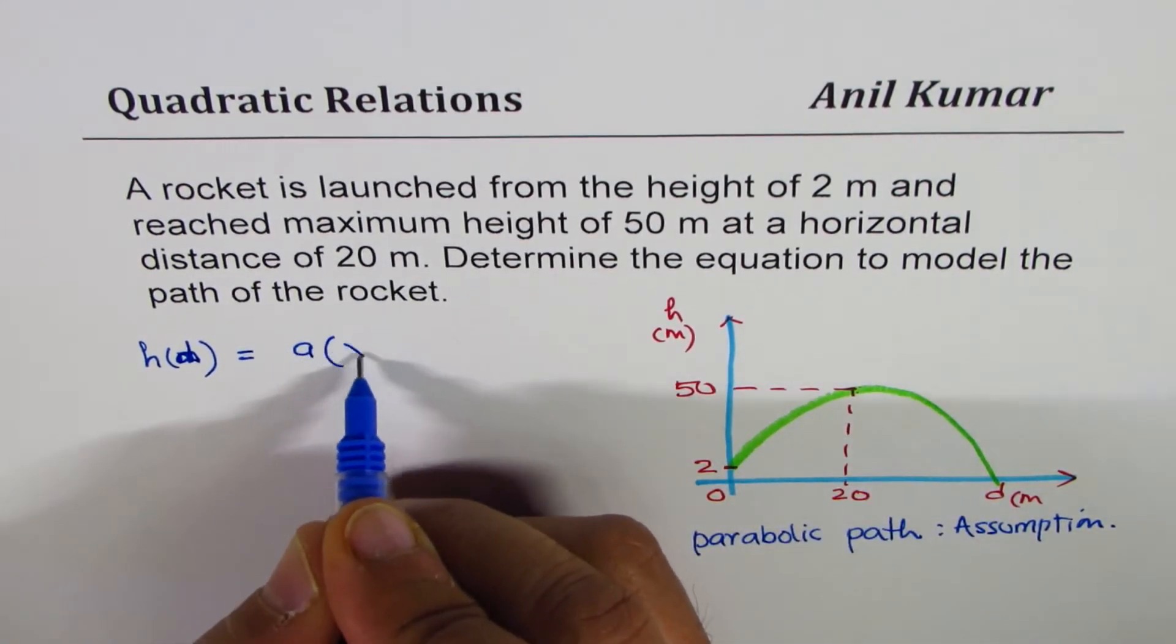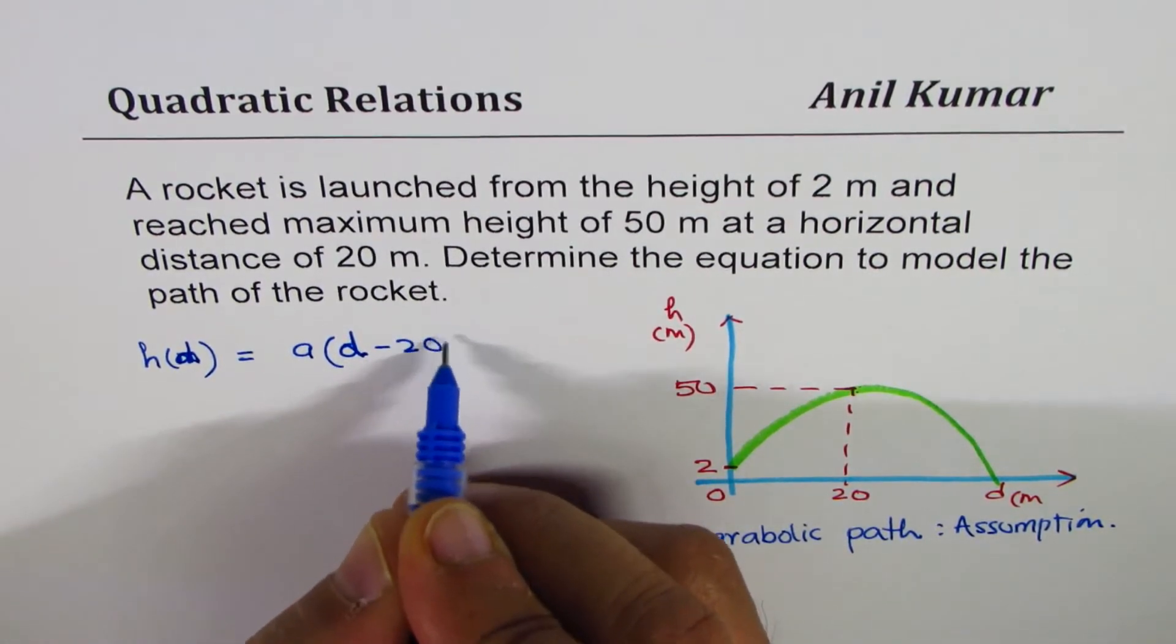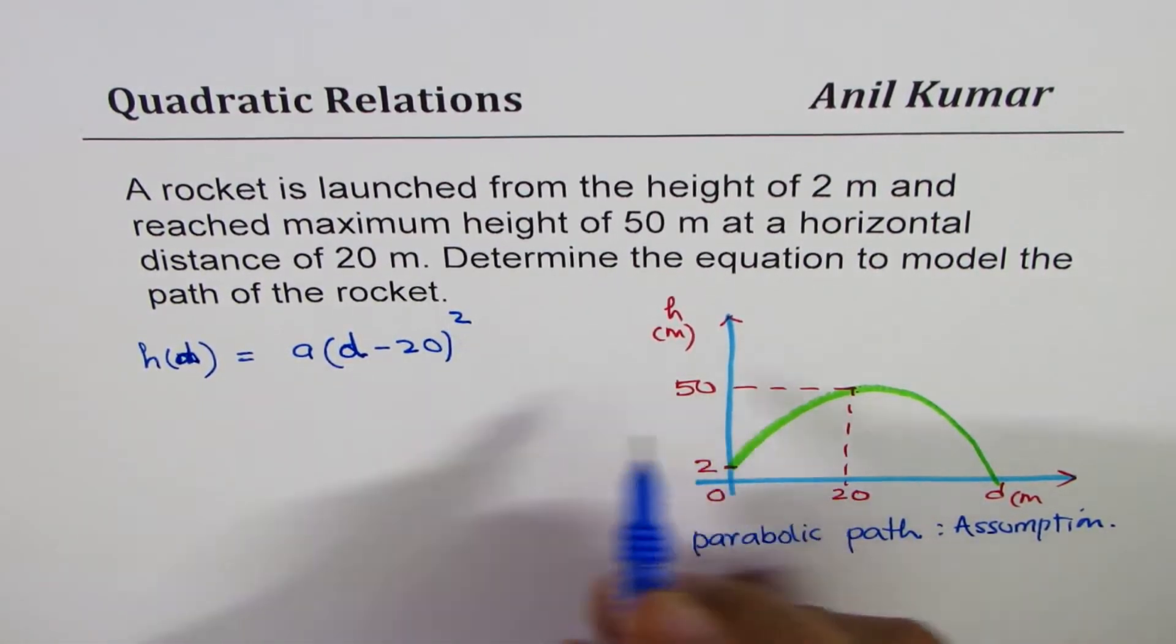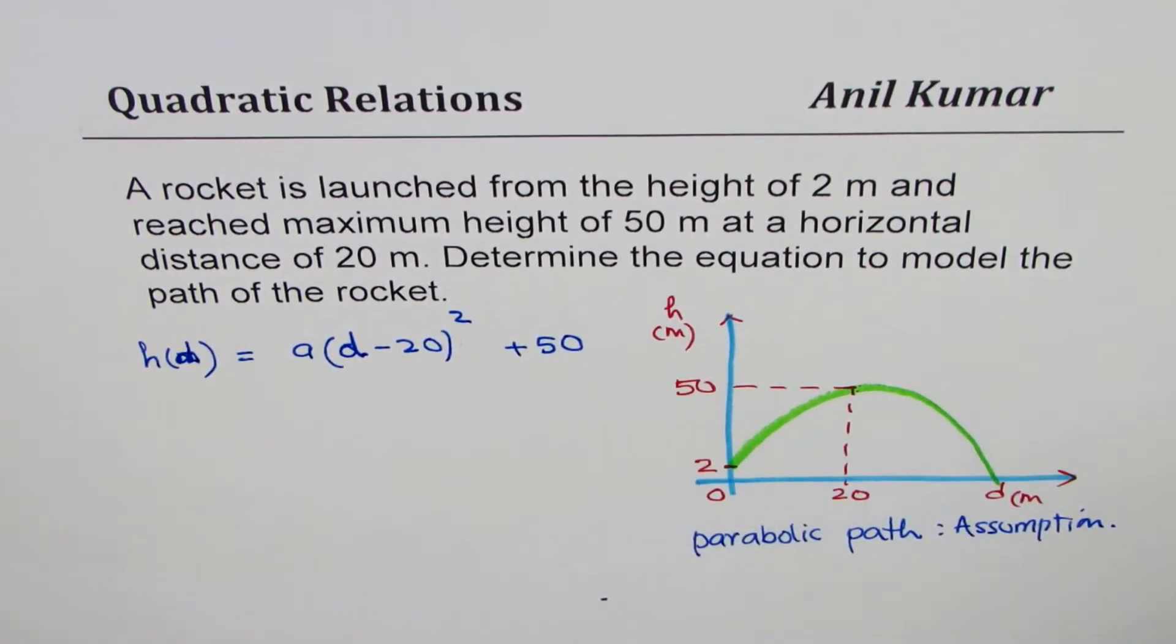Let's say A times D at 20, which is minus 20 whole square, maximum height is 50. That is how we get our equation.